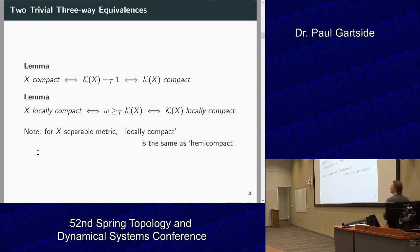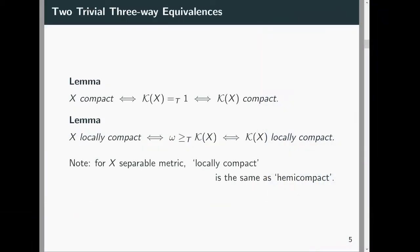The problem setup is to connect together the three objects: space X, K of X ordered up to the Tukey order, and K of X as a topological space. Here are two trivial examples. First, X is compact — meaning there's a biggest compact subset, X itself — and by the classical theorem the hyperspace of compact subsets of a compact space is itself compact. Second, X is locally compact is the same as K of X being locally compact.